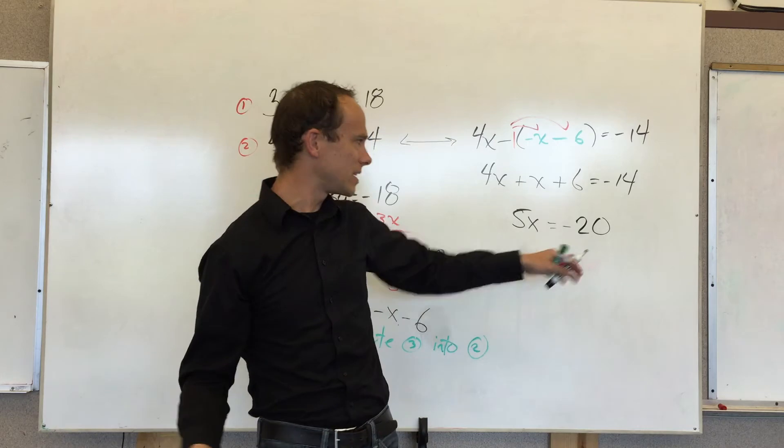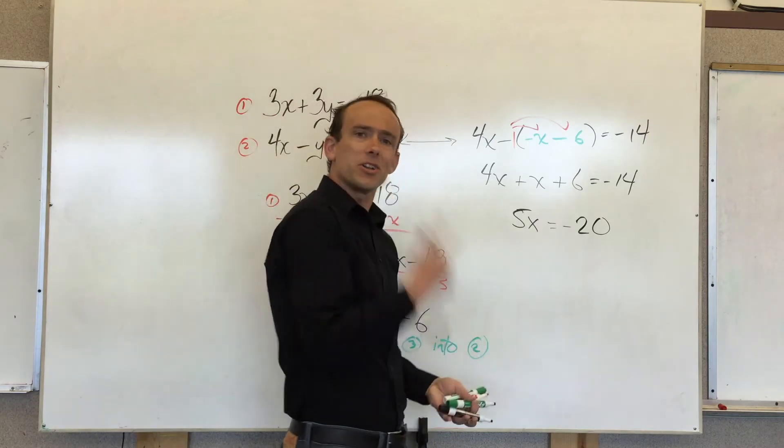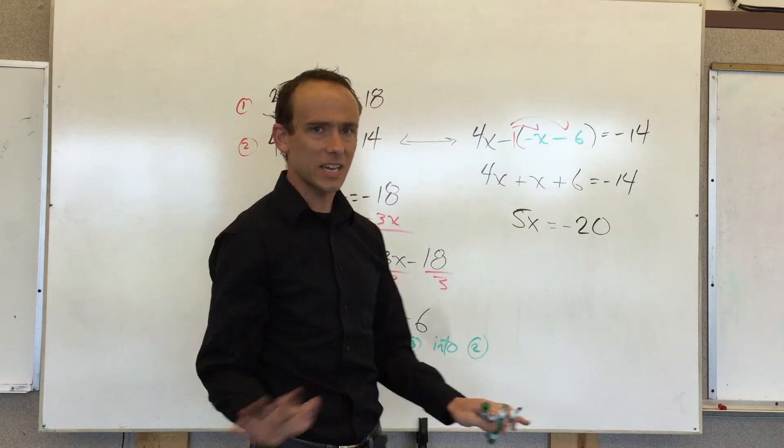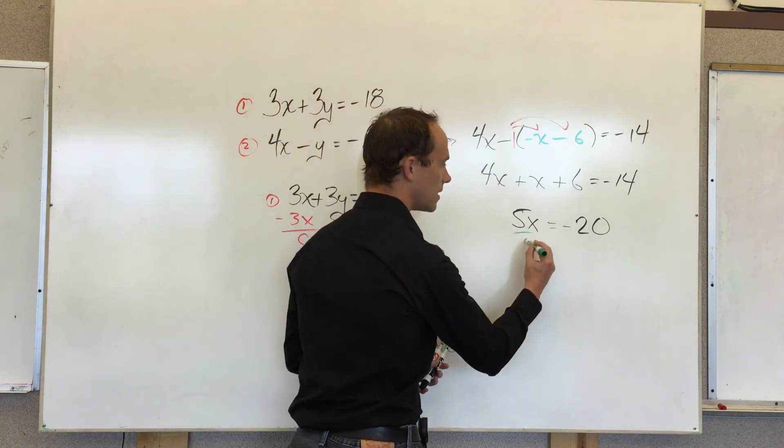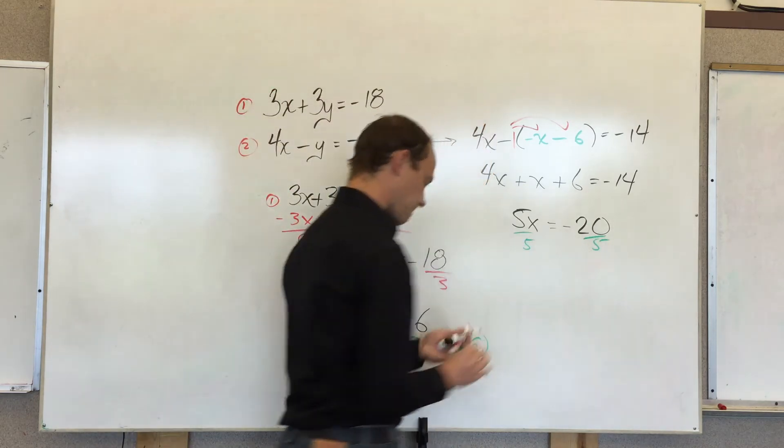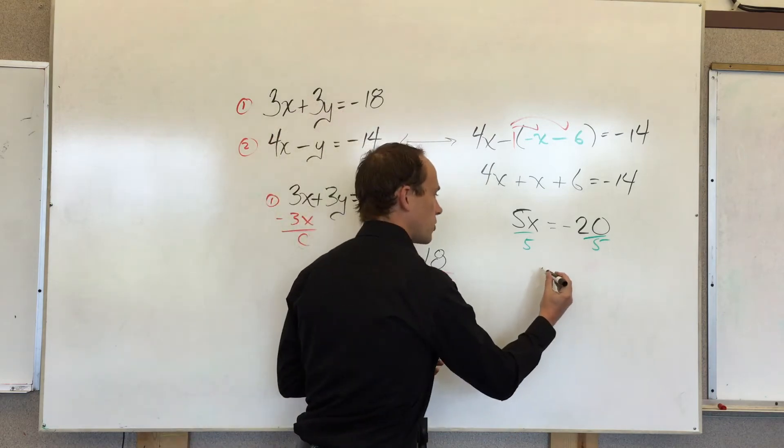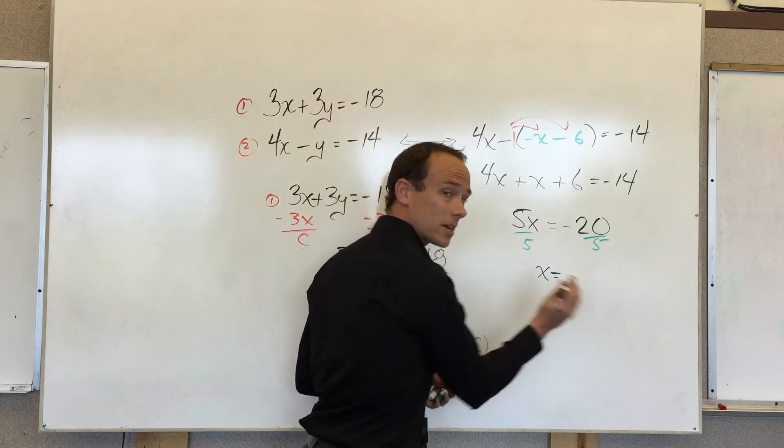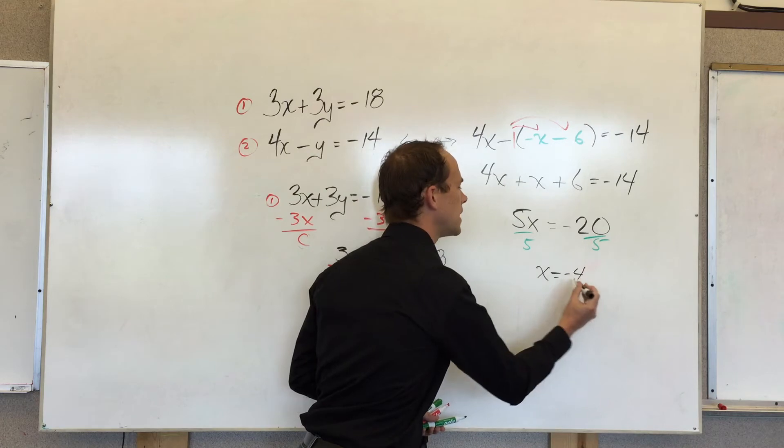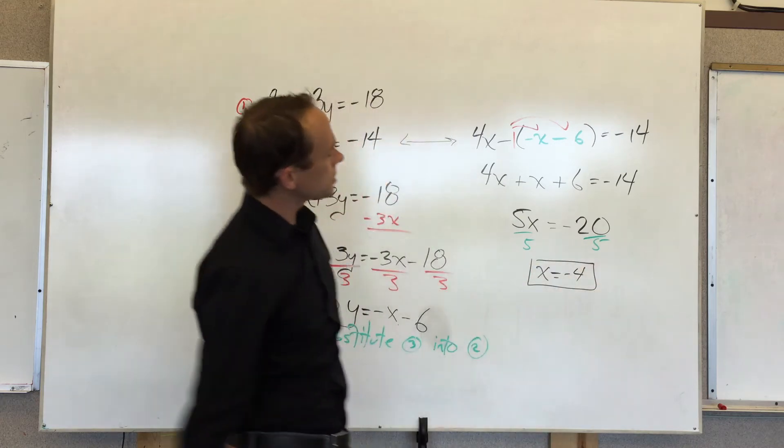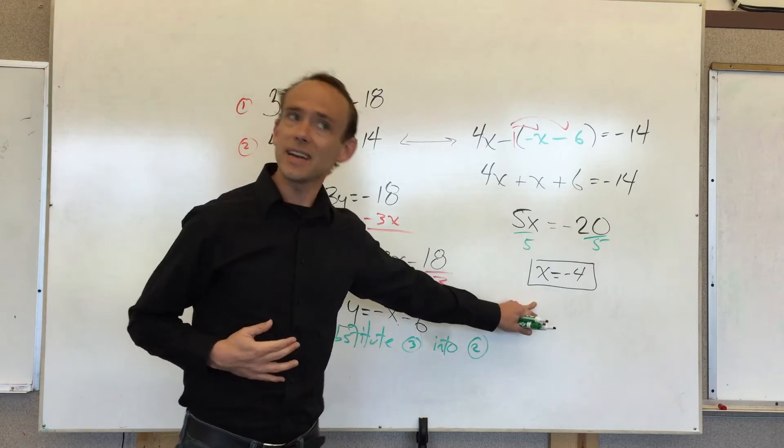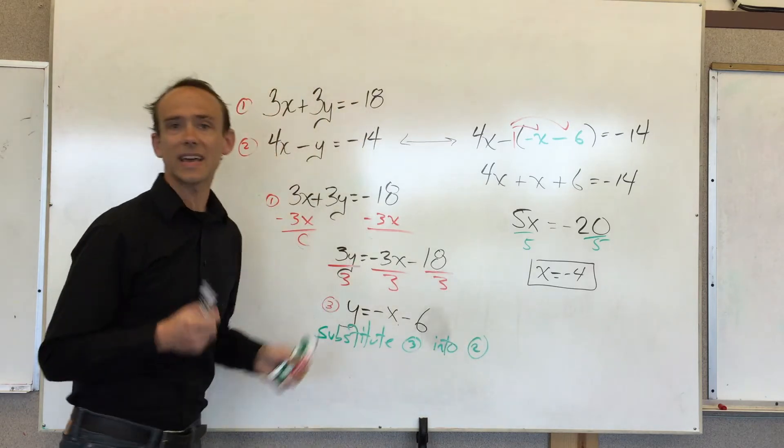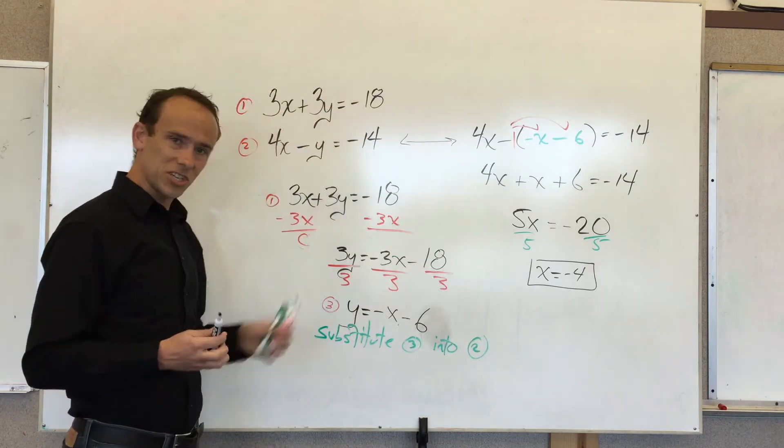I'm almost there. 5 times some weird unknown equals negative 20 right now. You could just probably look at that and say, Mr. Miller, it must be negative 4. Oh, I don't agree. But I'm going to divide by 5 because I'm in the mood to show all my steps. I'm not always in that mood, by the way. So x equals negative 4. I'm almost done because I have x. I just now need to solve for y.